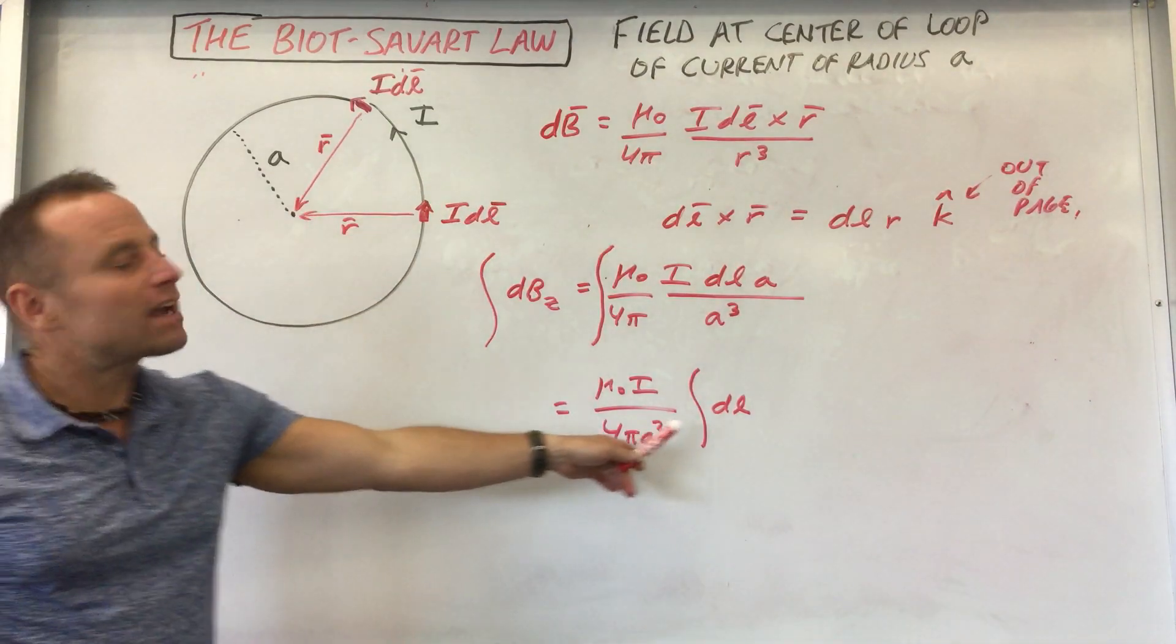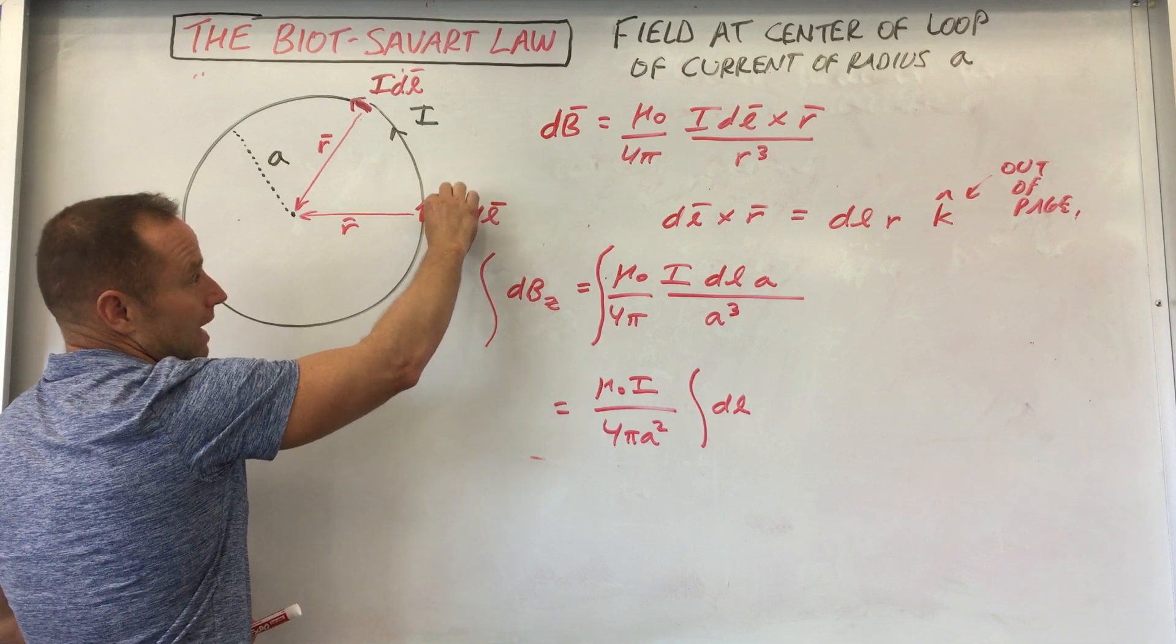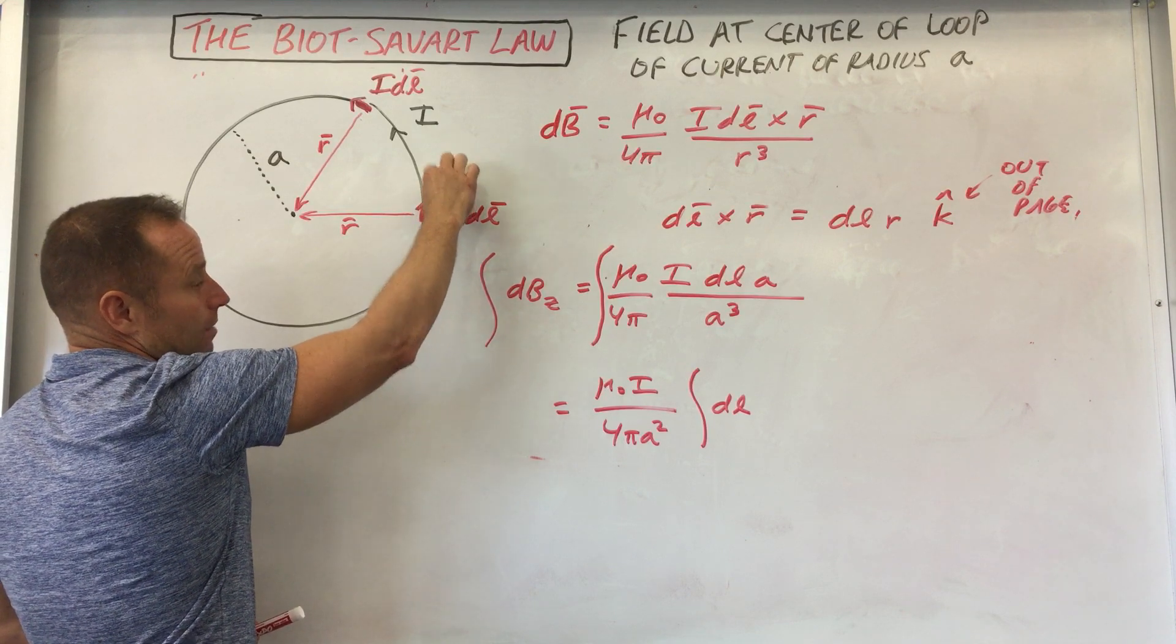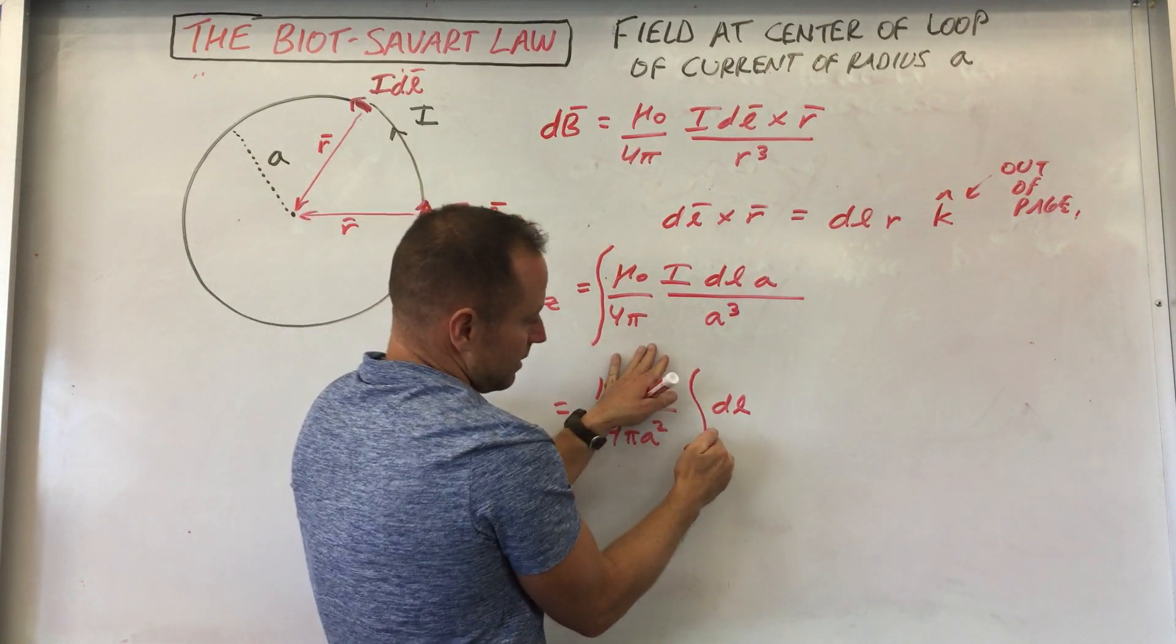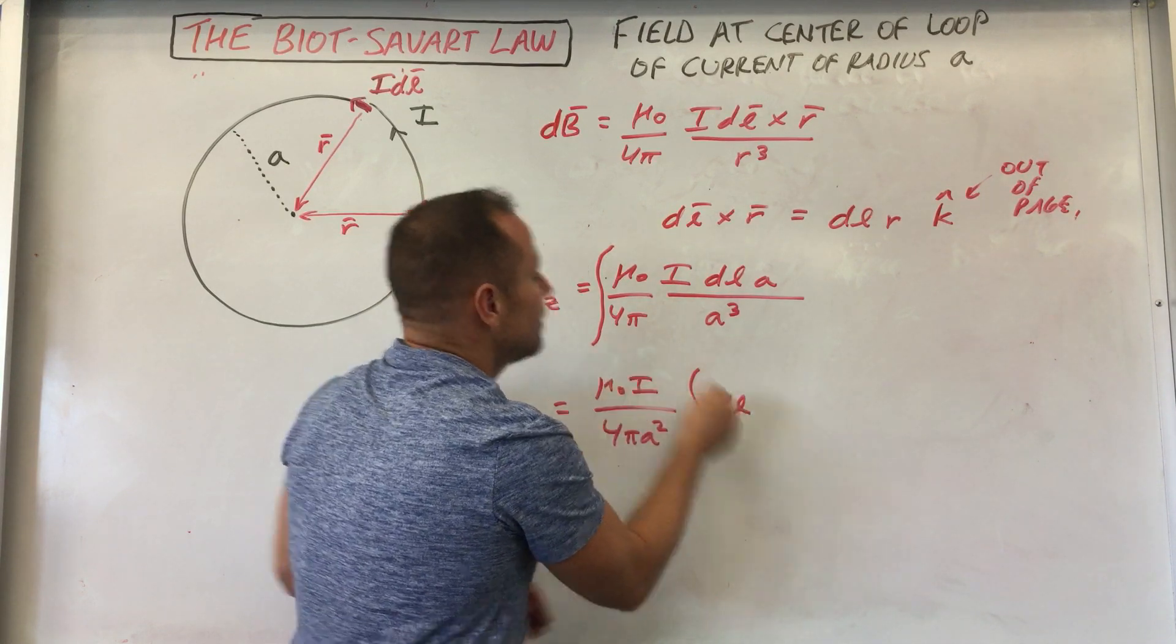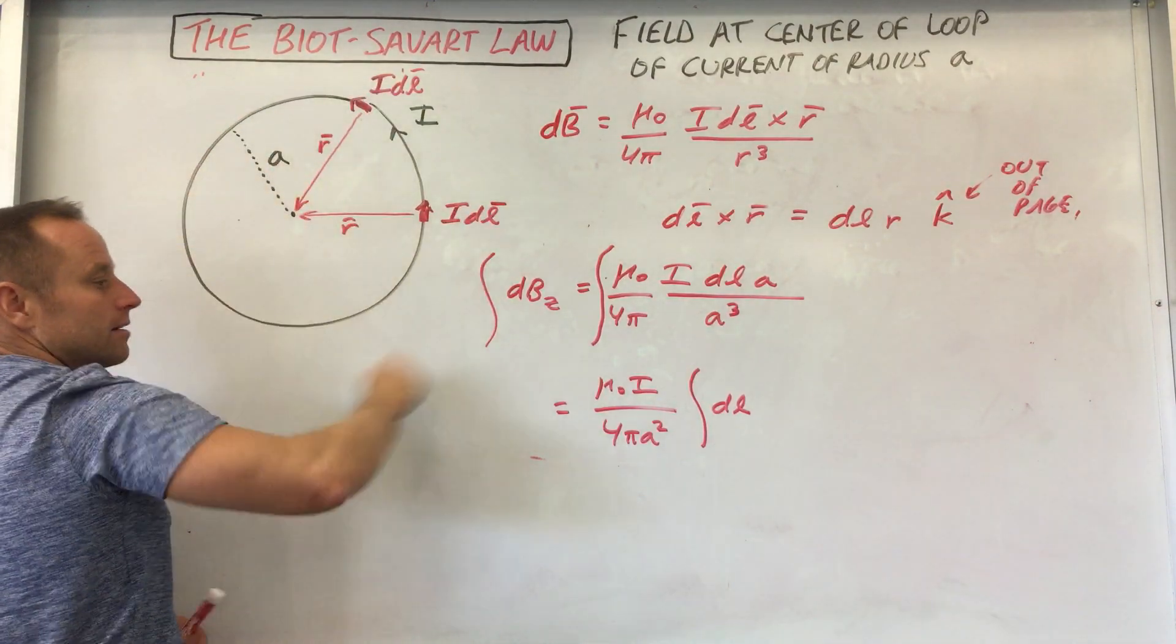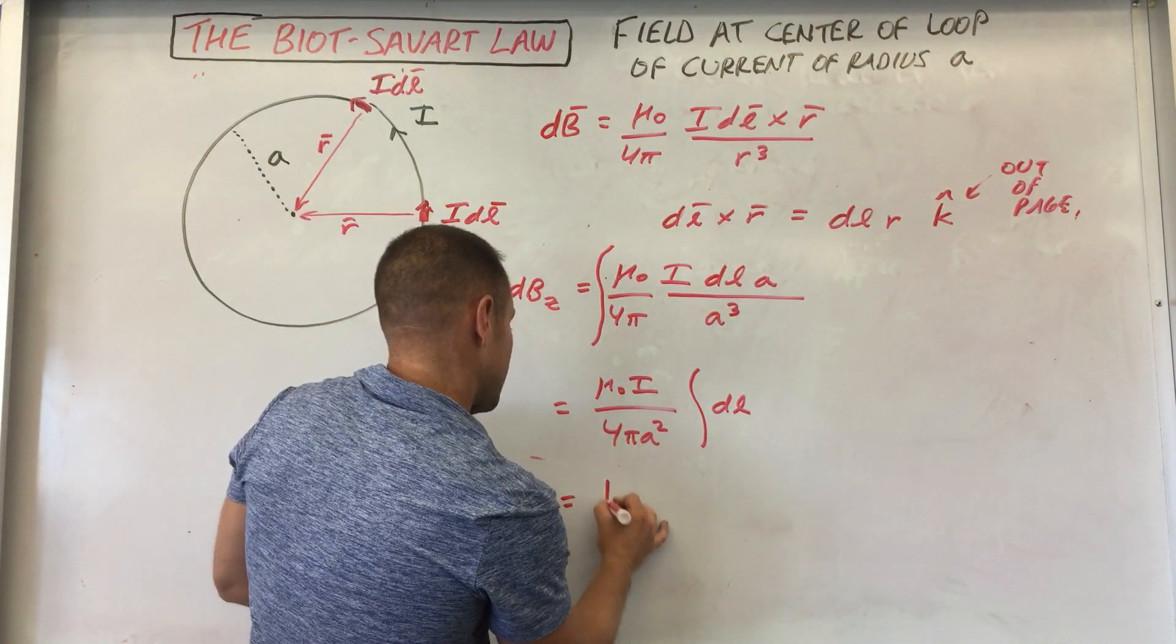Now, if you really think about what this means, DL is just a little chunk of the length. Well, if you add up the English meaning of this, sum up all the DLs. That means sum up all the lengths. Well, the sum of all the lengths is just going to be the circumference of this thing. So let's do that.